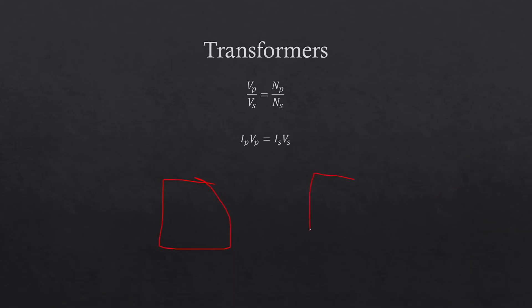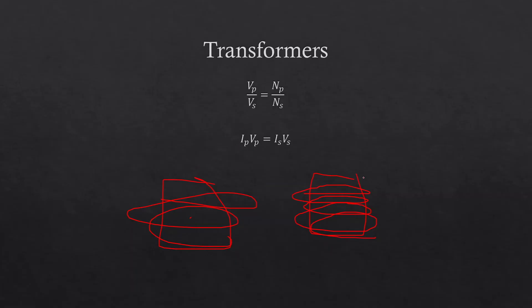For transformers: the ratio of voltages equals the ratio of turns — Vp/Vs = Np/Ns. Power is conserved between the two sides. In a step-up transformer, more turns on the secondary means higher voltage and lower current on that side. Lower current means lower temperature in the wire, which means lower resistivity and greater efficiency of energy transfer — that is why step-up transformers are used for long-distance power transmission.